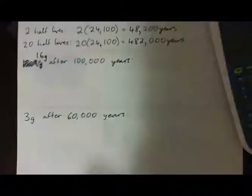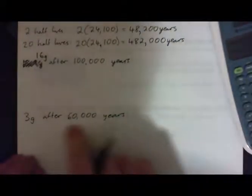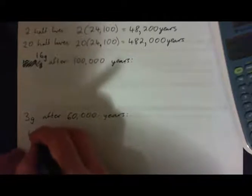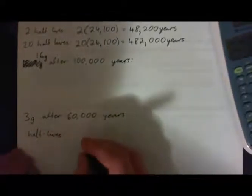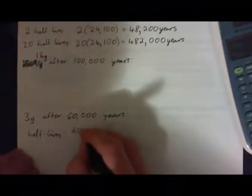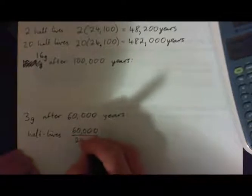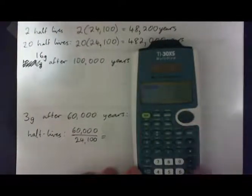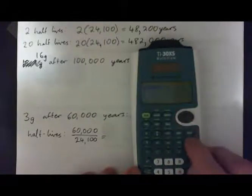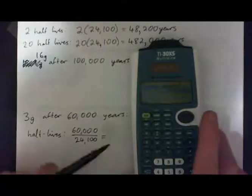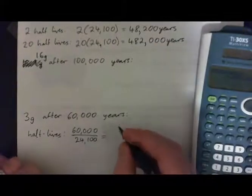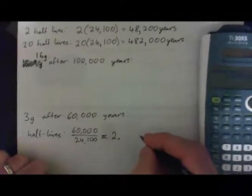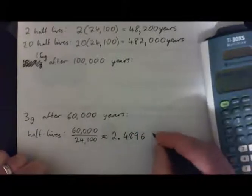So onto the next part of the question. If you had 3 grams of plutonium-239, how much would be remaining after 60,000 years? First of all, we need to figure out how many half-lives that is. I'm going to go straight for it. Half-lives: that's 60,000 divided by 24,100.